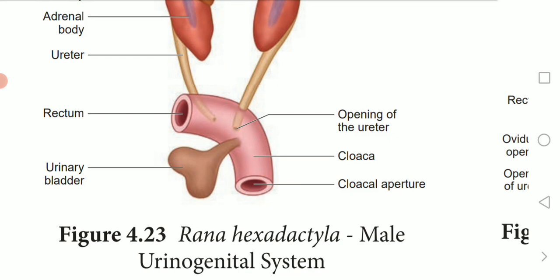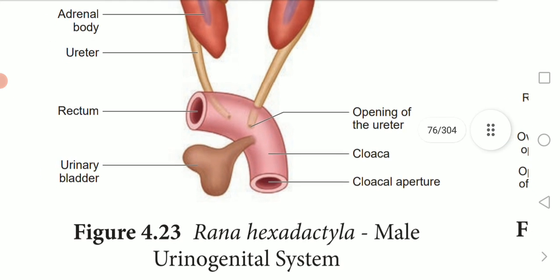The parts used in the excretory system are: urinary bladder, cloaca, cloacal aperture, and the opening of the ureter. The elimination of nitrogenous waste and salt and water balance are performed by a well-developed excretory system. It consists of a pair of kidneys, urinary bladder, and cloaca.